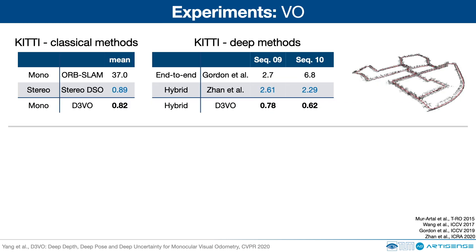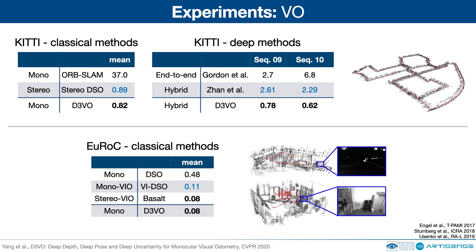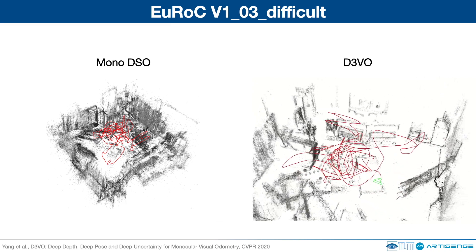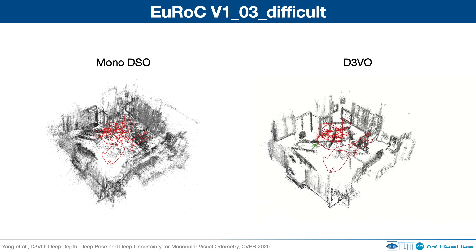Next, we show the evaluation results of visual odometry on the KITTI dataset. D3VO can deliver comparable results to the state-of-the-art stereo methods despite being a monocular method. It can also outperform other deep learning-based methods with large margins. D3VO can deliver comparable results to the state-of-the-art monocular inertial and stereo inertial methods while using only a single camera. We show a video of D3VO running on the V103 sequence of the EuRoC dataset. As a comparison, we show the reconstruction result of monocular DSO on the left. As you can see from the video, D3VO can deliver more consistent 3D reconstruction, which reflects the lower drift of the pose estimations.